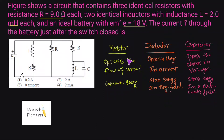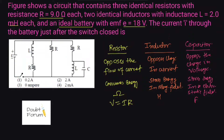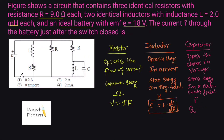The unit of resistance is ohm, the unit of inductance is henry, and the unit of capacitance is farad. The value of resistance is given by Ohm's law: V = IR. The inductance of an inductor is given by Faraday's law of electromagnetic induction: induced EMF = L × dI/dt. The capacitance of a capacitor is given by Q = CV, where Q is charge stored, C is capacitance, and V is the applied voltage.